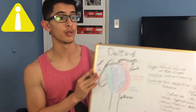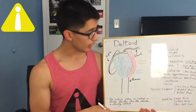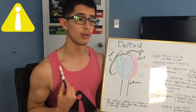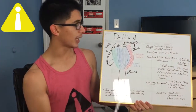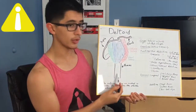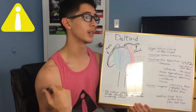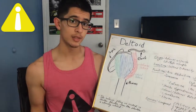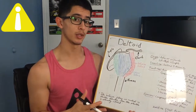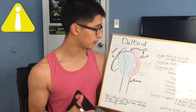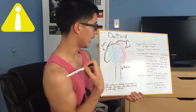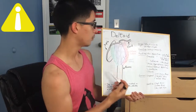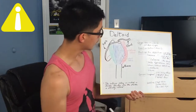I did the best I could to draw the deltoid muscle, and if I were to turn to my left this would be my right shoulder. The deltoid is a three-headed muscle group and each one has its own different origin and insertion. The deltoid has three main heads and then seven subdivisions, but primarily we're going to focus on the three heads.